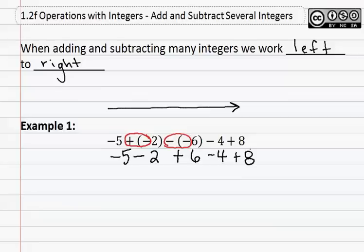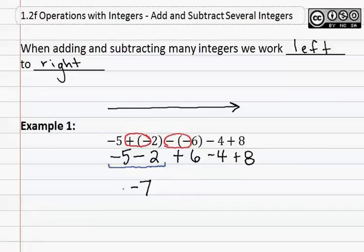We now have a problem that has no double signs, so we may start working left to right. We do the first two numbers. They are both negatives, so since they are the same sign, we use the rule: same sign, add and keep. This means we do five plus two to give us seven, and keep means we keep the sign of the two numbers. We then bring everything else straight down and continue the problem.